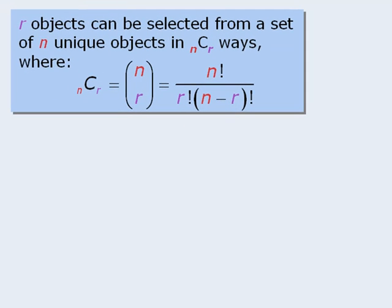This formula can be used to determine the number of ways to select r objects from n unique objects when the order of the selected objects does not matter.